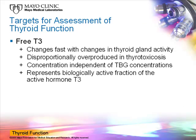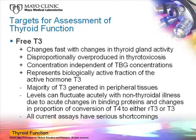Free T3 has the same advantages, more or less, as free T4, but very similar disadvantages. One of the major disadvantages here is that all current free T3 assays have serious shortcomings and generally are not recommended — they are too unreliable in many clinical situations. The limitations are caused largely by the very low concentrations of the analyte being measured. Free thyroxine concentrations are already only a few percent of the total thyroxine concentrations. Free T3 concentrations, in turn, are only a few percent of the total T3 concentrations, and the total T3 concentrations are never more than 20% of the total thyroxine concentrations. So we are talking about low picomolar concentrations, which causes a lot of analytical problems.